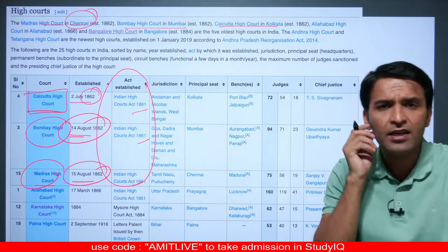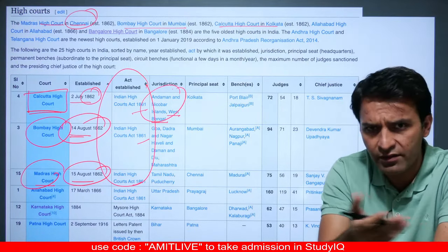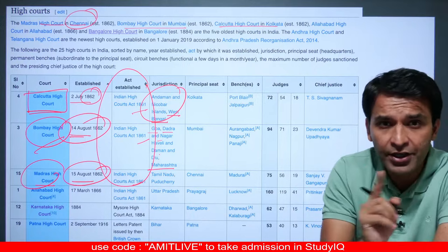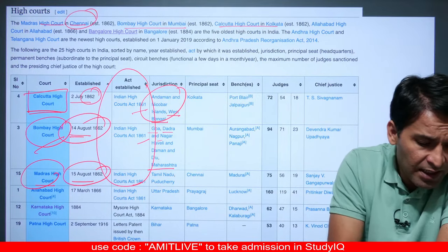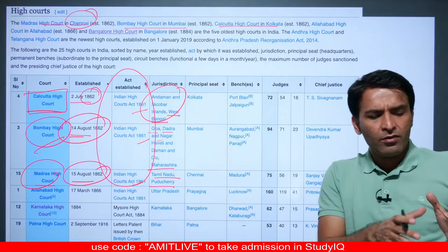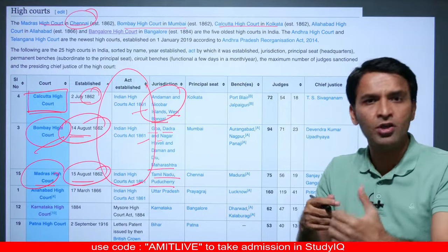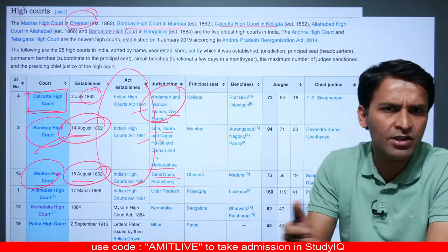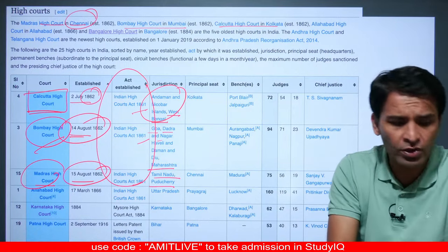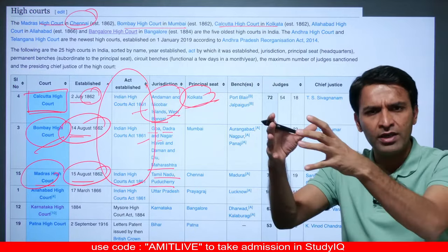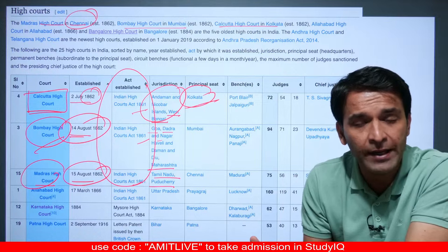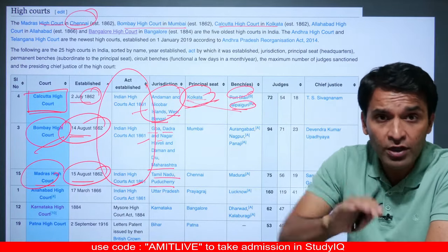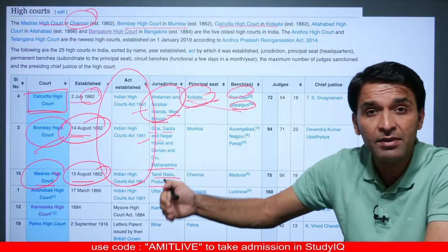The Kolkata High Court currently serves two jurisdictions: West Bengal and the Union Territory of Andaman & Nicobar. The Bombay High Court covers Goa, Maharashtra, and the Union Territory of Dadra, Nagar Haveli, and Daman & Diu. The Madras High Court covers Tamil Nadu and the Union Territory of Puducherry. The Kolkata High Court has benches in Calcutta, Jalpaiguri (West Bengal), and Andaman & Nicobar. The Bombay High Court has its principal seat in Mumbai with benches in Aurangabad, Nagpur, and Panaji.